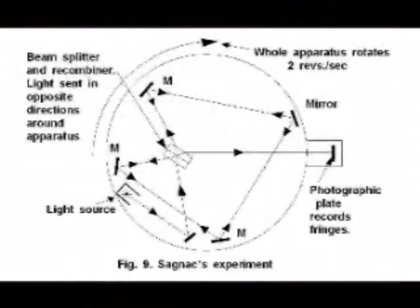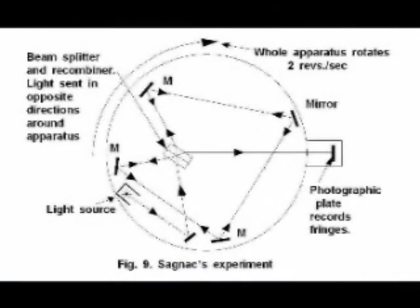However, in 1913, Sagnac carried out a simple experiment in a laboratory. He had a turntable and passed a beam of light clockwise one way, and another beam of light anticlockwise the other way, then compared them when they came back to the measuring center. As he turned this table, he found that the light traveling in different directions recorded different fringes, that is the way they measured them, on his experiment.